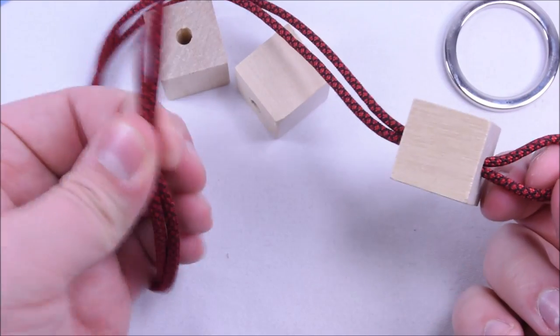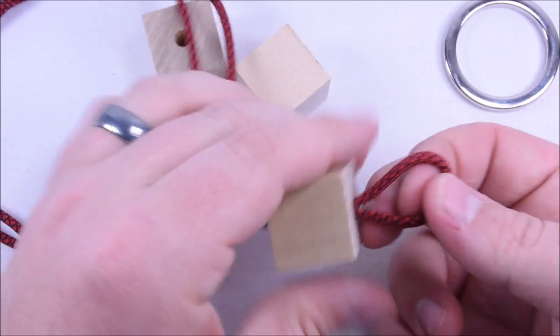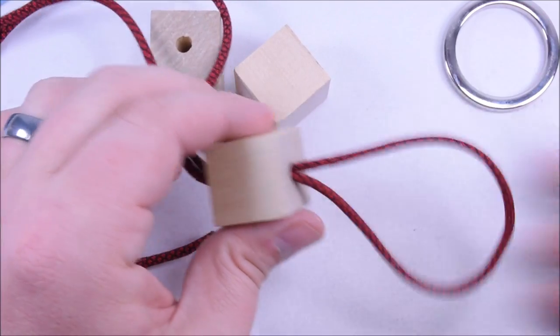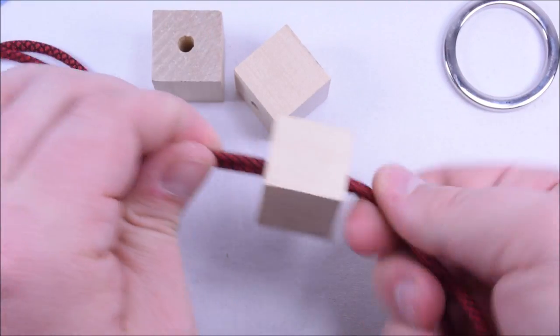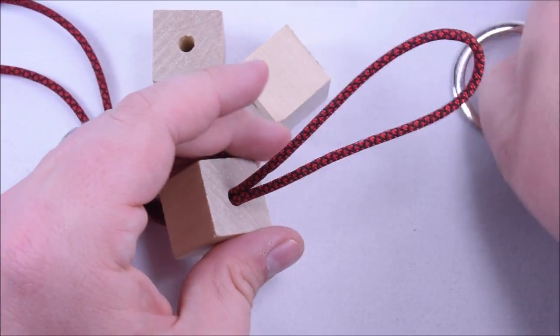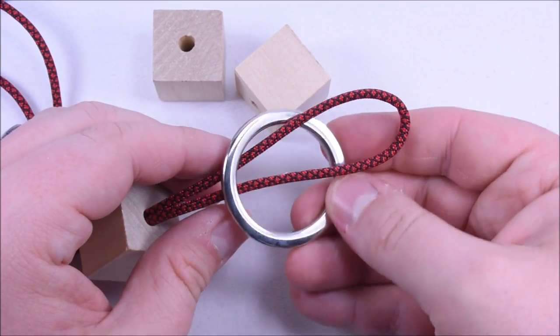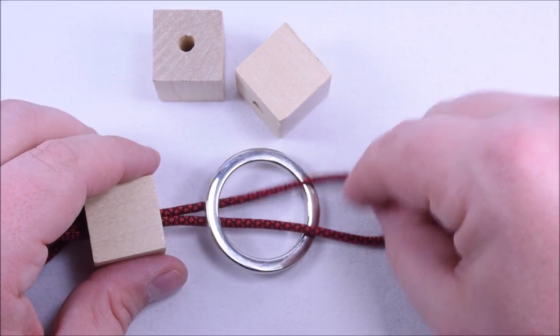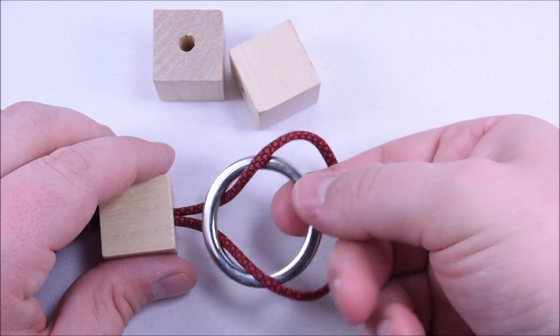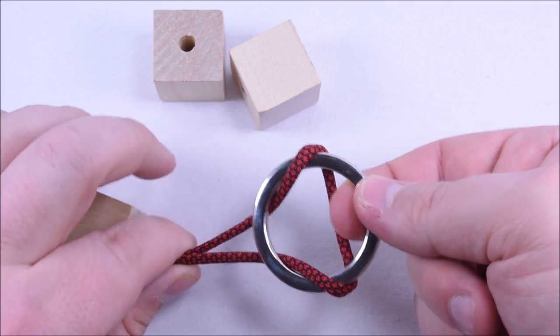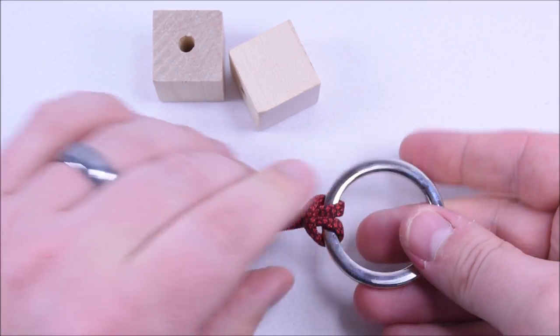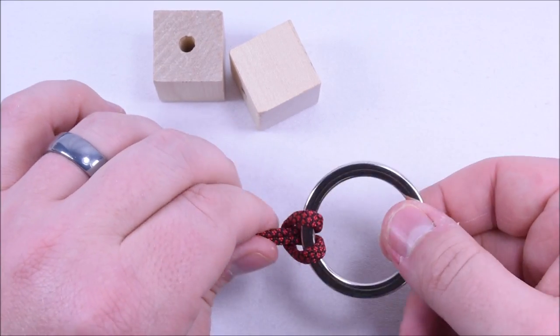Once you have your cord through here like this, you have your two ends still equal, you have a loop coming through your bead. This loop here, you're just going to pass a ring over it like this. Open this up, grab the bead or grab the ring and pull this down. That gives you a lark's head, also known as a cow's hitch.